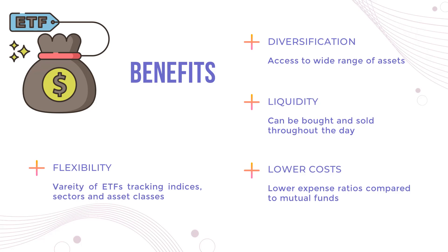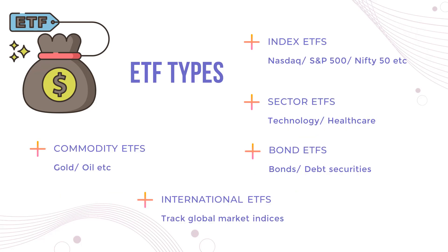There are numerous ETFs available that track various indices, sectors, and asset classes, giving investors a lot of options to choose from based on their investment goals and risk tolerance. ETFs also generally provide the benefit of lower costs — they have lower expense ratios compared to mutual funds. While a mutual fund may charge one or two percent, ETFs are much more cost-effective.